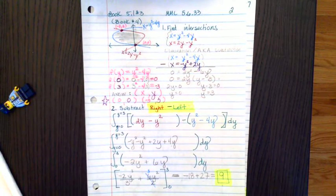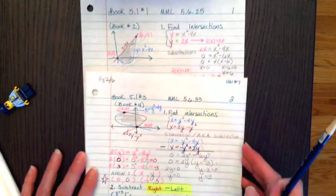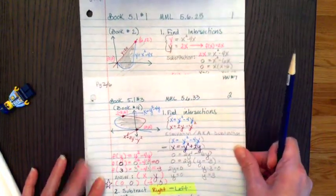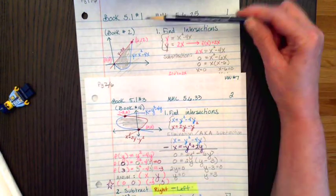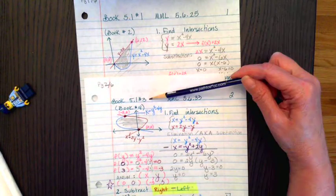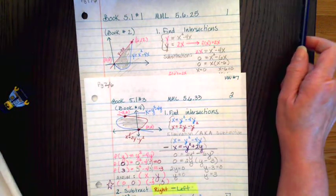Find the area between two functions when the graph is given to you. I'm going to stop the video here so that it doesn't get too long to upload.